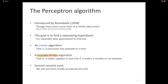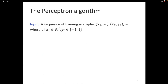Let's formalize the mechanics. The input is a sequence of examples. Each example is a feature vector xi associated with a true label yi — so you have pairs (x1, y1), (x2, y2), and so on. Each xi is a d-dimensional vector in R^d; each yi is either minus 1 or plus 1. This is a binary classification task. This setup will appear many times throughout the semester.